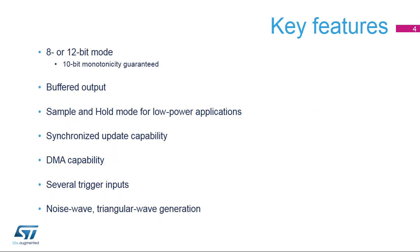The Digital to Analog Converter inside STM32G0 microcontrollers offers simple digital to analog conversion in 8 or 12-bit mode. 10-bit monotonicity is guaranteed. The DAC outputs can have a low impedance buffer to drive external loads. Its sample and hold mode can reduce power consumption significantly, and the two converters can be synchronized with each other.